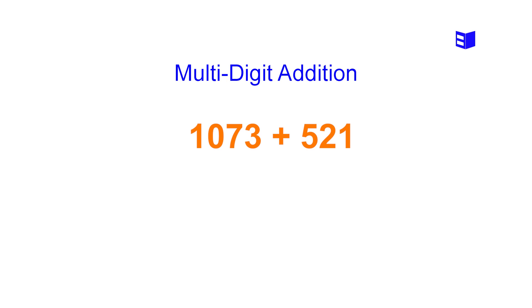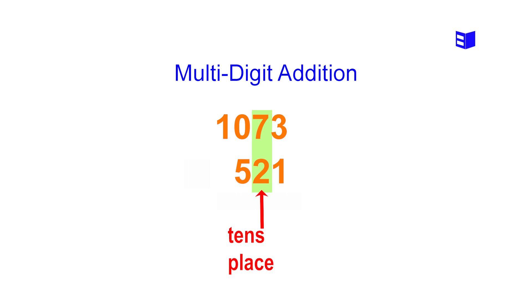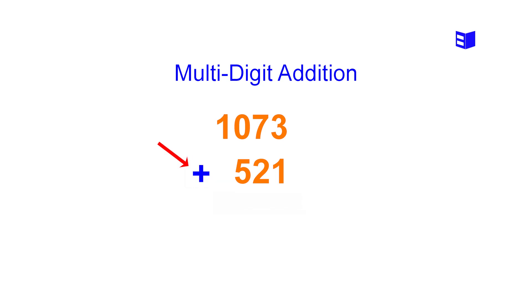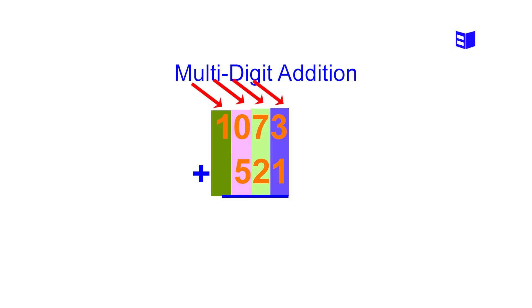Let's take another example: 1073 plus 521. First, write the numbers on top of each other — ones in the same column, tens in the same column, hundreds in the same column, and thousands in the same column. The numbers 3 and 1 are in the ones column, 7 and 2 are in the tens column, and 0 and 5 are in the hundreds column. For the thousands column, 1073 has a 1 in that position while 521 does not have a digit there. Next we place a plus sign to the left of 521 and draw a line below the numbers.